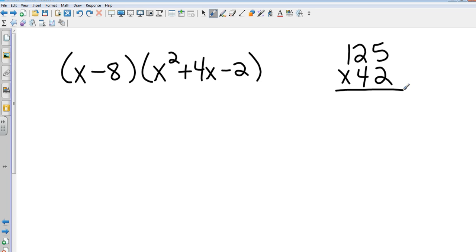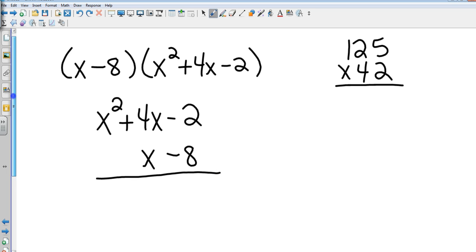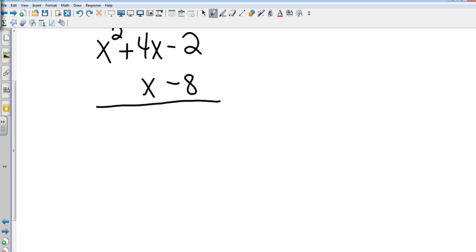I can do the same thing with trinomials and binomials. So I put my trinomial on top because it has the most terms, and underneath it I put my x minus 8. And now I'm just going to do some old-school multiplication. I'm going to take negative 2 times negative 8, which is positive 16. Then I take my negative 8 times my positive 4x, which gives me negative 32x. Then I do my negative 8 times x², that gives me negative 8x².